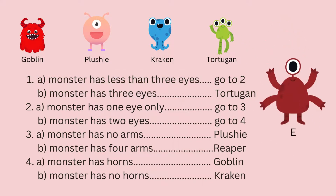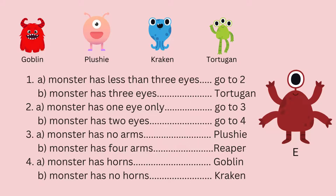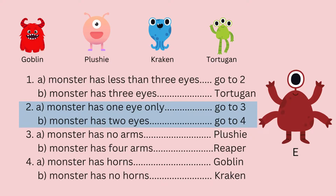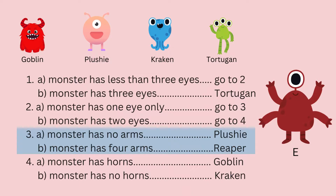Finally, we get to identify Monster E. Since we have identified all other monsters, we could conclude that Monster E is Reaper, but let's use the dichotomous key to confirm. Step one: does the monster have three eyes or less than three eyes? Since Monster E has less than three eyes, we proceed to step two. Does it have one eye or two eyes? It has one eye, so we proceed to step three. Does the monster have no arms or four arms? It has four arms, so we can confirm the identity as Reaper.